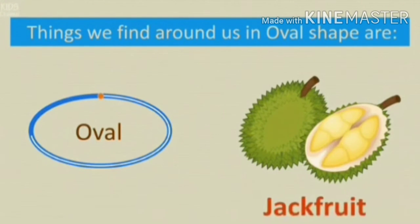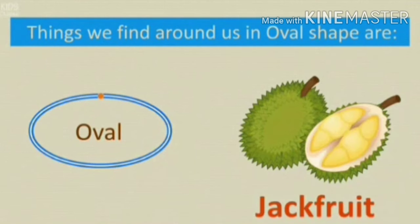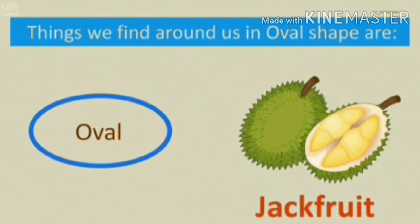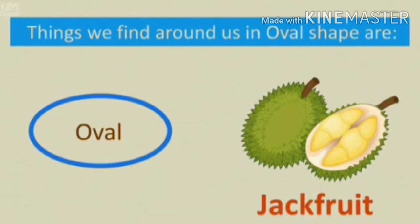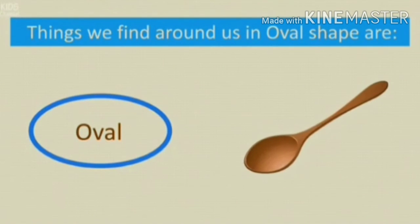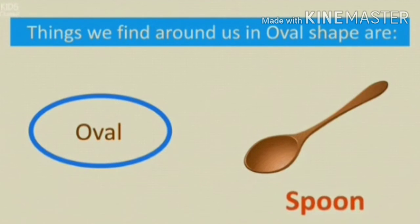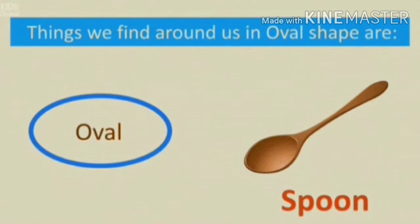The next is a jackfruit. Look at the jackfruit — this is also an oval. And the shape of spoon is also like an oval shape.